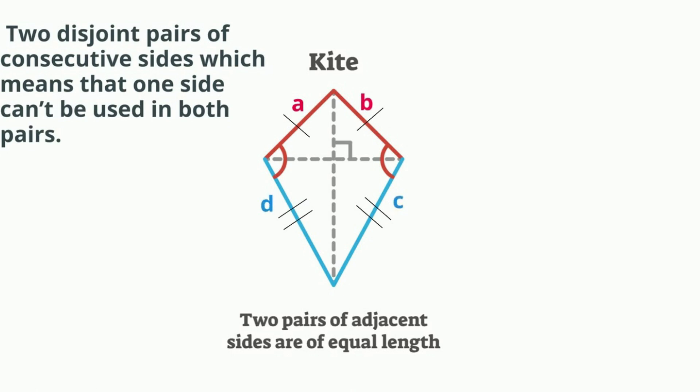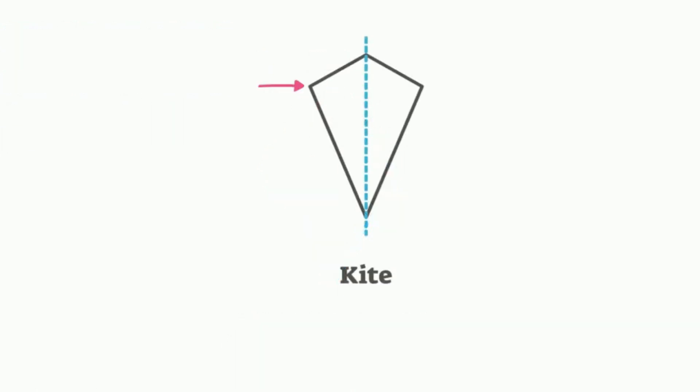The angles that are opposite each other and in between the two different length sides are also congruent. Remember, congruent means equal.